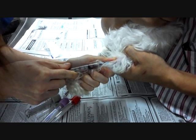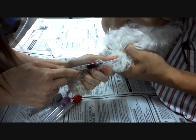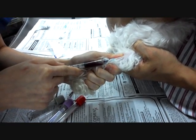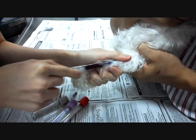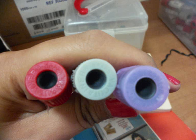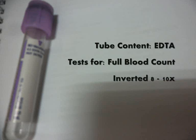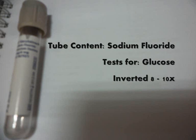The veterinary technician then squeezes the upper forelimbs slightly to allow the vein to protrude. Otherwise, a tourniquet can be used. This is done to occlude the blood supply to the vein. The veterinarian is then able to insert the needle to withdraw around one to three mils of blood. The blood collected is divided into three tubes: red, grey, and purple. The red tube contains clot activator and tests for lipid profile; it has to be inverted five times before being sent to the lab. The purple tube contains EDTA, an anti-clotting agent, and tests for full blood count; it has to be inverted eight to ten times. The grey tube contains sodium fluoride and tests for glucose; it also has to be inverted eight to ten times.